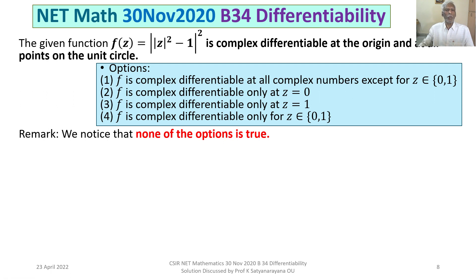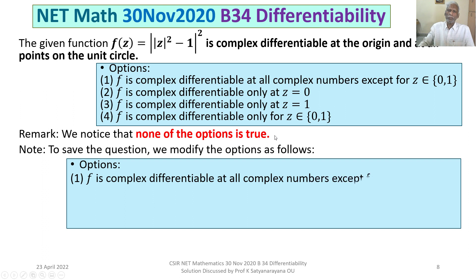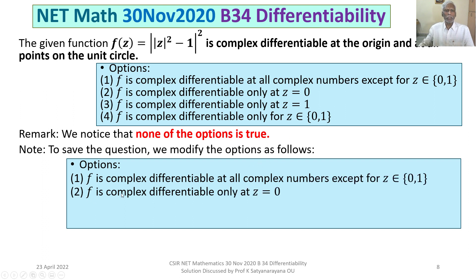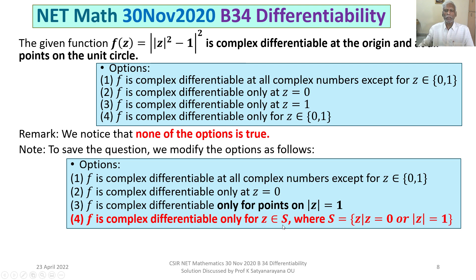To save this question, we modify the options as follows. Option 1 is kept as is and is not true. Option 2 is kept as is and is not true. Option 3 is modified to: f is complex differentiable only for |z| = 1 — this is also not true because it is also differentiable at z = 0. Option 4 is modified to: f is complex differentiable only for z in S, where S consists of all z such that z = 0 or |z| = 1. With this modification, option 4 is true.